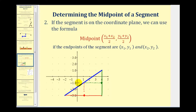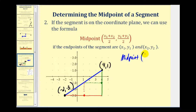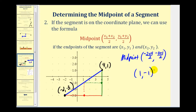Let's go ahead and use this formula by determining the endpoints of this segment. This endpoint would be the point negative two, negative three, and this endpoint here would be the point four, one. So the midpoint will be x₁ plus x₂, or negative two plus four divided by two, and y₁ plus y₂, or negative three plus one divided by two. Negative two plus four is two, divided by two is one. Negative three plus one is negative two, divided by two is negative one. So the midpoint is the point one, negative one, which we'll label M for midpoint.